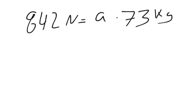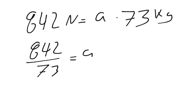So 842 newtons equals the acceleration times 73. And so we divide by our 73 kilograms. So 842 over 73 equals our total acceleration. And so when we solve that, we get the acceleration equals 11.53 meters per second squared.